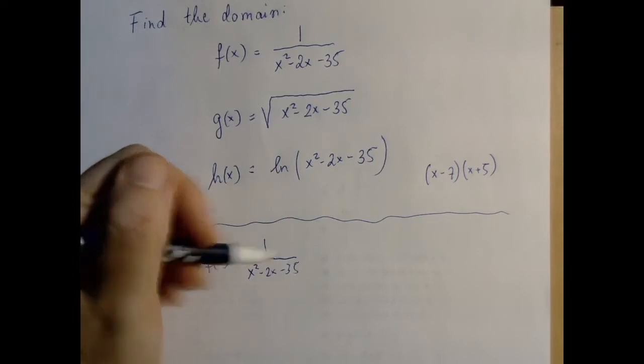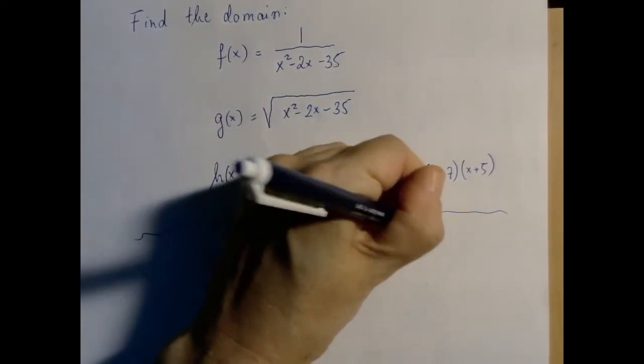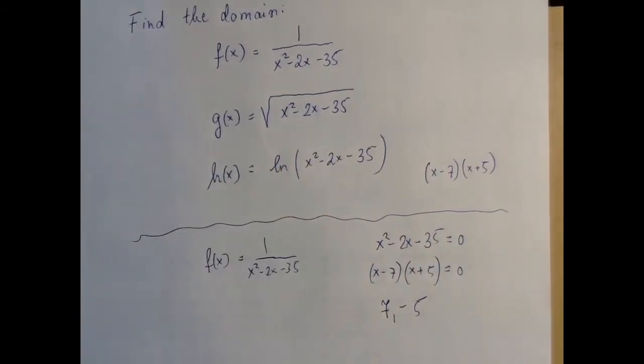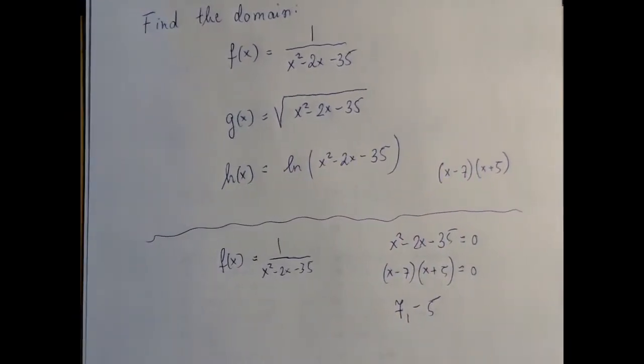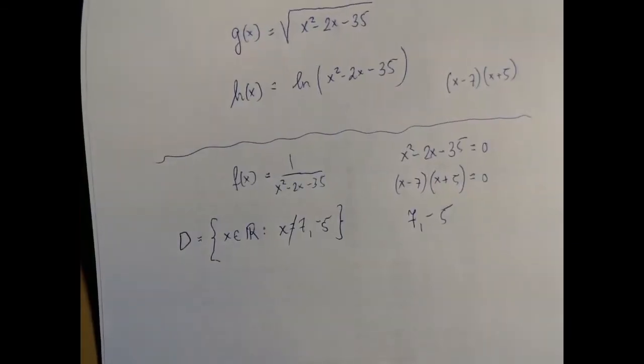So we're going to solve for x squared minus 2x minus 35 equals zero. And so we get seven and negative five. Therefore, the domain is the set of all real numbers except for seven and negative five.